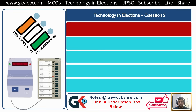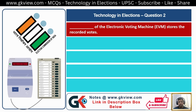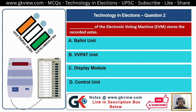Question Number 2. Which part of the electronic voting machine stores the recorded votes? A. Ballot unit, B. VVPAT unit, C. Display module, D. Control unit. The answer is D: Control unit.